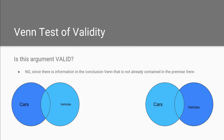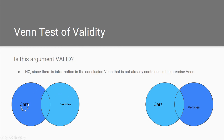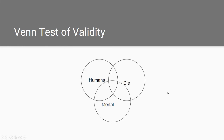Remember, the premise is that all cars are vehicles, which allows for some vehicles that aren't cars. But the conclusion is saying all vehicles are cars. Since the premise allows vehicles that aren't cars, this is new information in the conclusion, and so this makes the argument not valid.